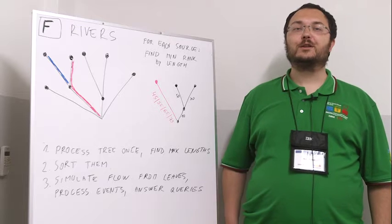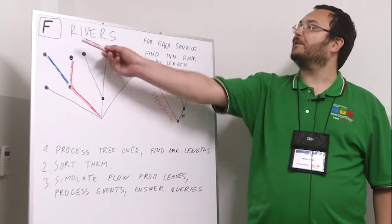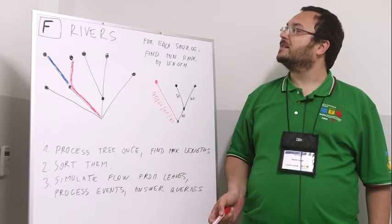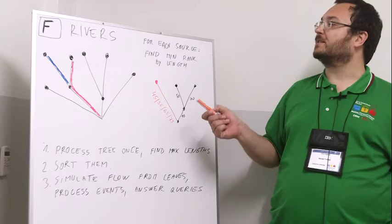Hello there. I'm Michal Forishek and I'm going to present problem F of this year's world finals. So problem F is about the rivers.